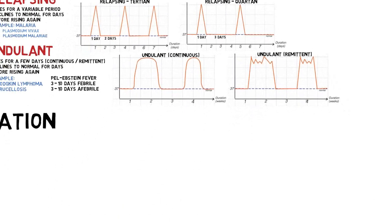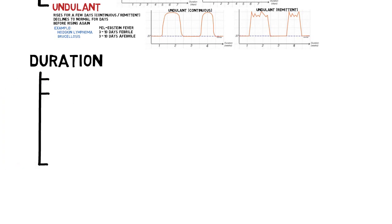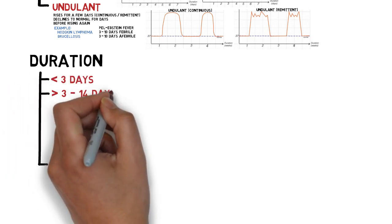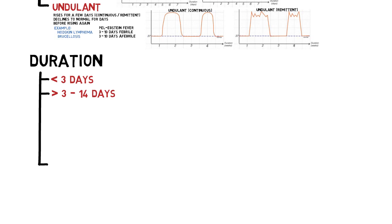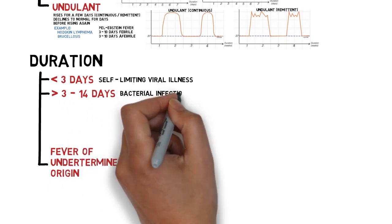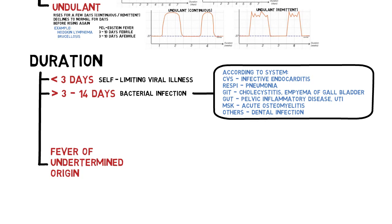The second useful classification is duration of fever, divided into three groups: fever lasting three days or less, fever lasting more than three days up to 14 days, and fever of undetermined or unknown origin. Fever less than three days is usually due to self-limiting viral illness such as the common cold. More than three days is usually due to bacterial infection, though it can also be caused by viral diseases such as dengue, which lasts five days, and acute hepatitis.